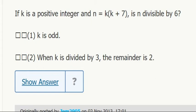K times K plus 7 divisible by 6. Does it have 2 and 3? Statement 1: K is odd.